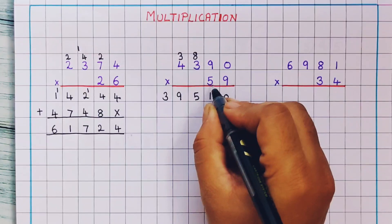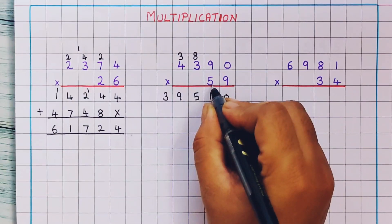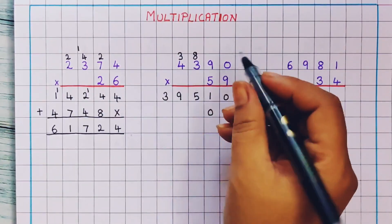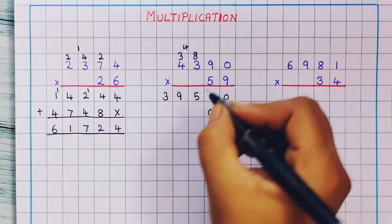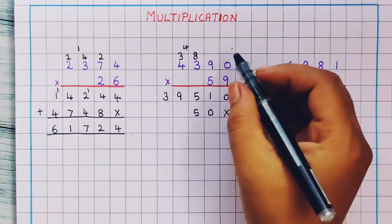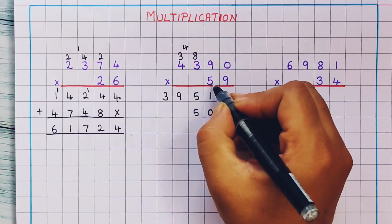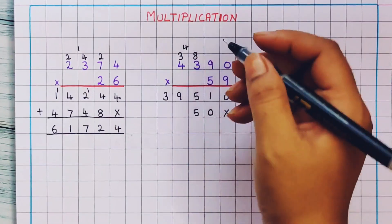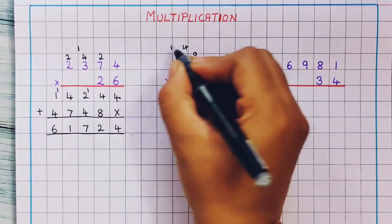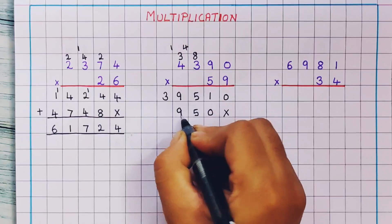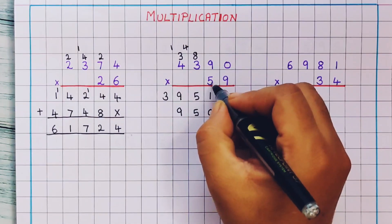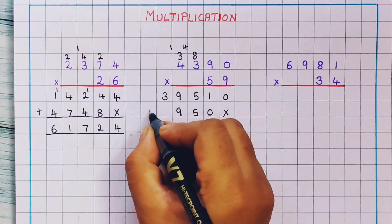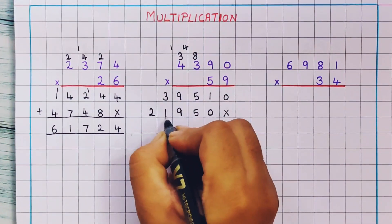Now we will start the multiplication using the next number. 5 3's are 15. 15 plus 4 is 19, so I will write here 1, 9 — 19. Then 5 4's are 20. 20 plus 1 is 21.